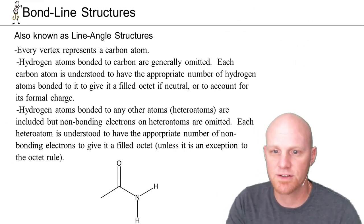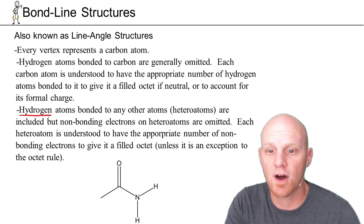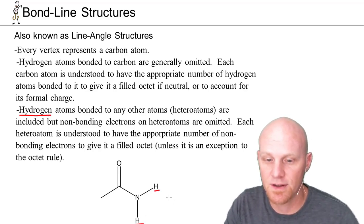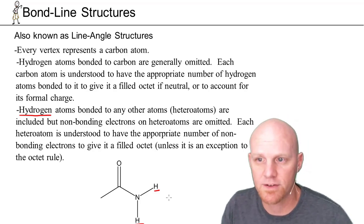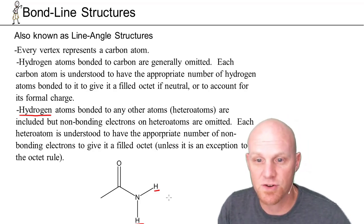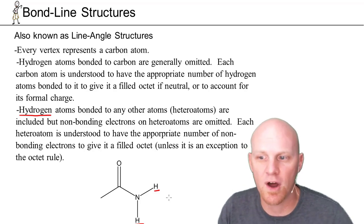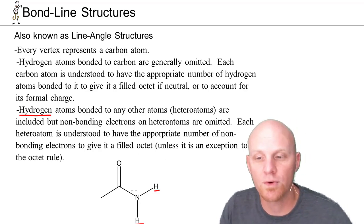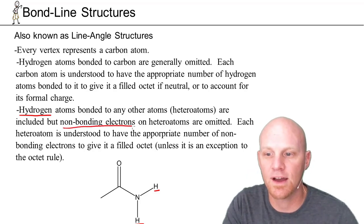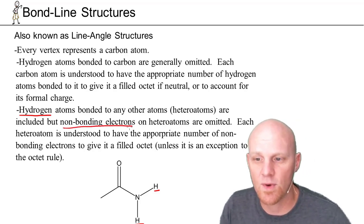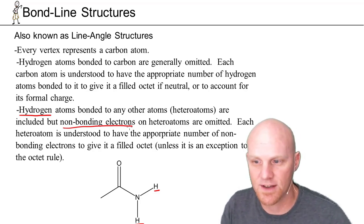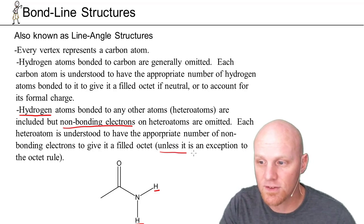Last bit of laziness: we do draw hydrogen atoms that aren't bonded to carbon if they're bonded to any other atom. So we've got a couple bonded to nitrogen, and we will draw those in. Any hydrogen bonded to any atom other than carbon, we draw it in. We'll find out later one special case where we draw a hydrogen bonded to a carbon atom, but we'll leave that for later. Also, for heteroatoms — atoms other than carbon and hydrogen — we don't include their lone pairs of electrons. It's inferred that just as you add hydrogens to give carbons a filled octet, you add lone pairs to give heteroatoms a filled octet, unless they're an exception to the octet rule.